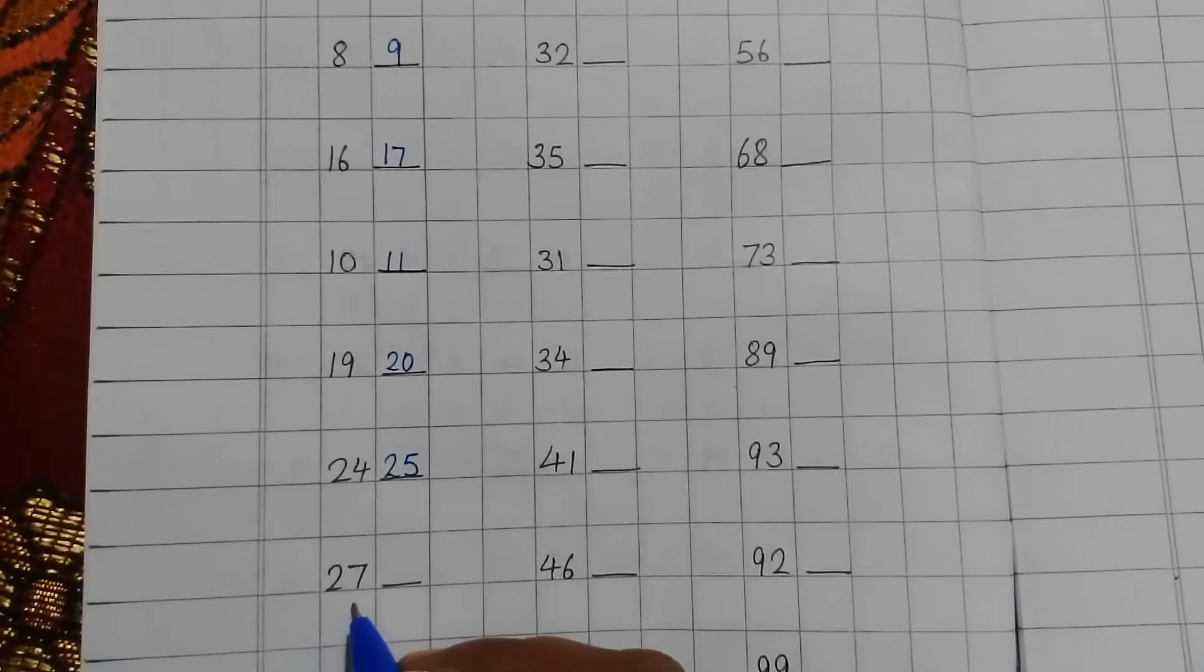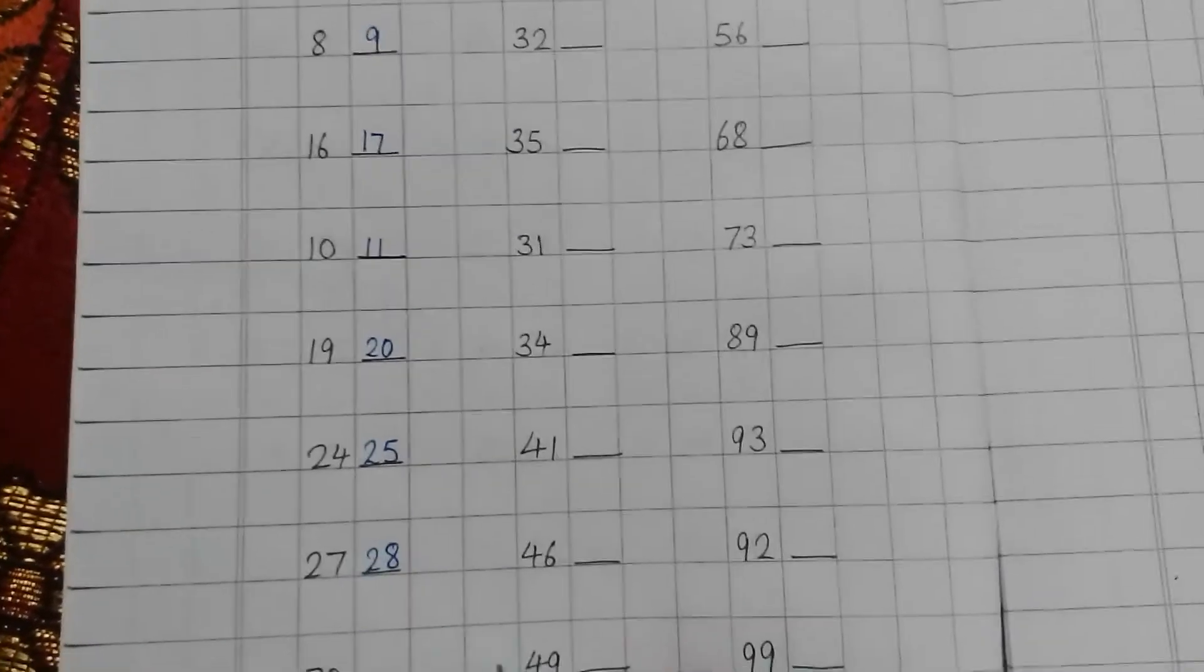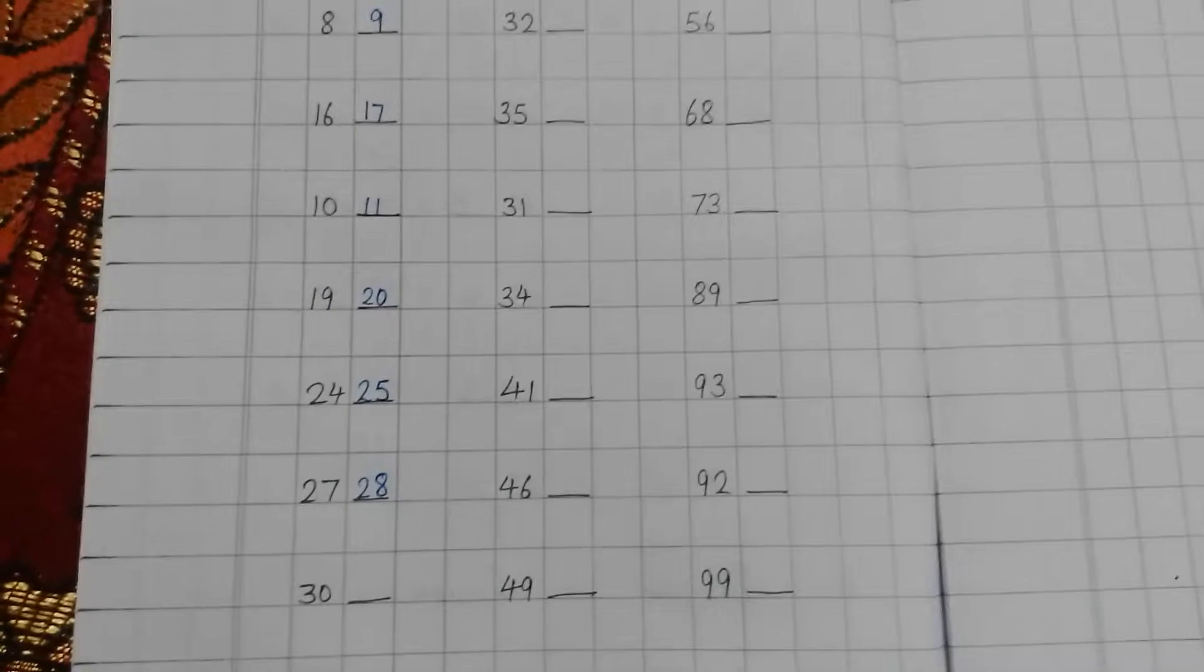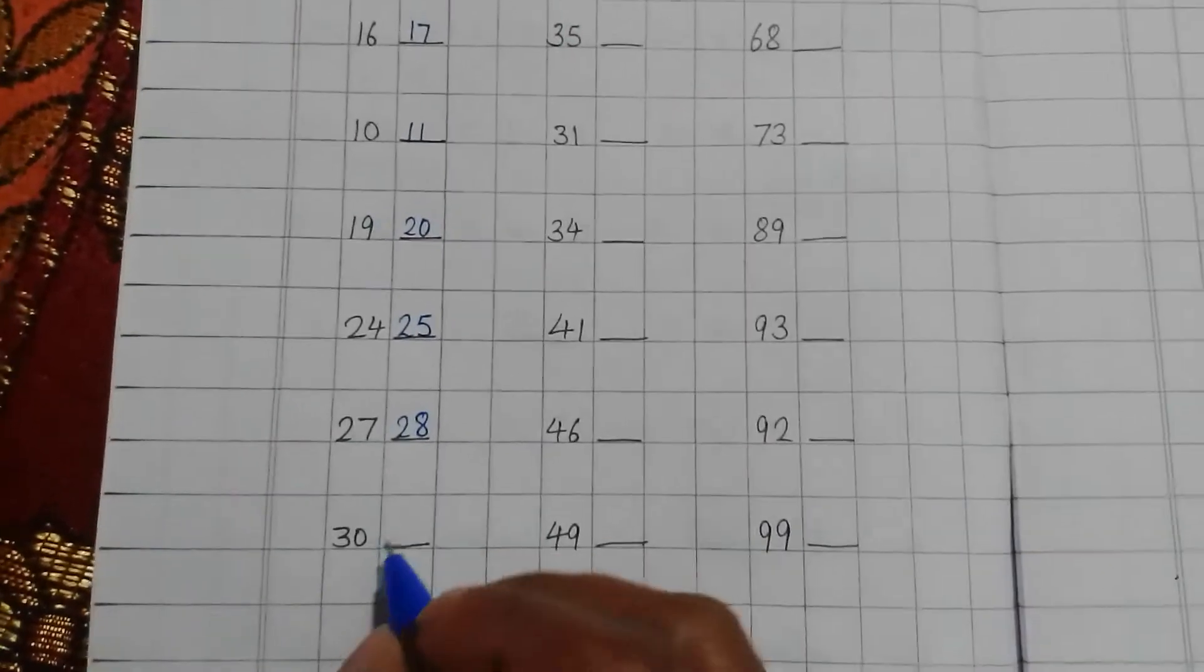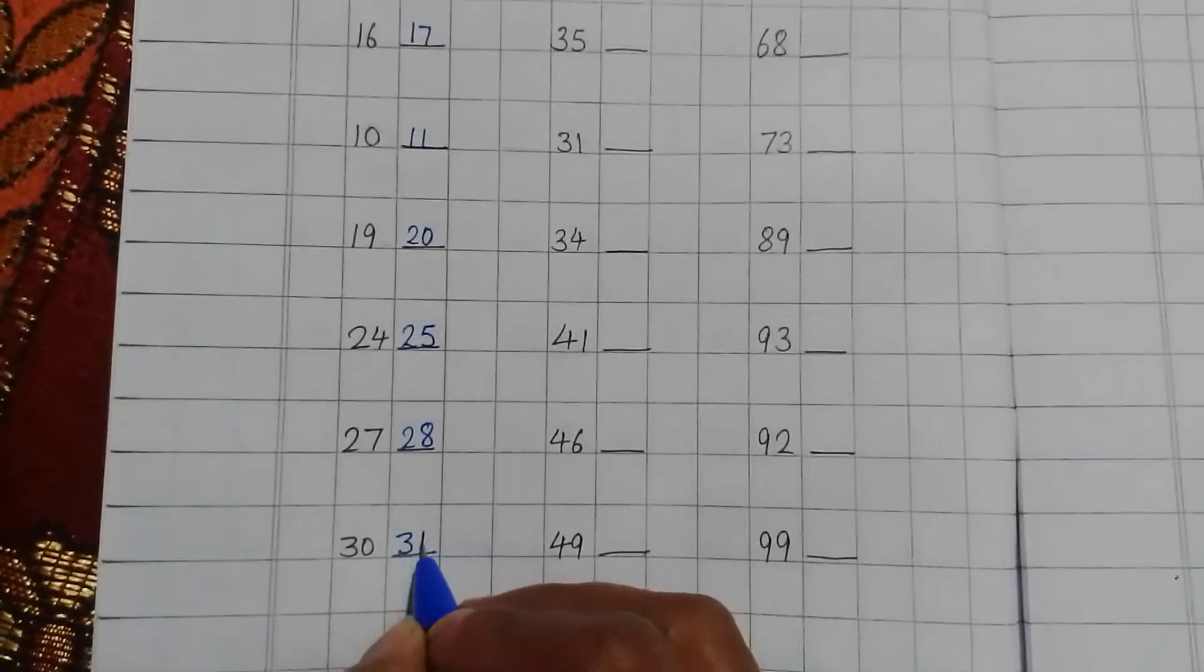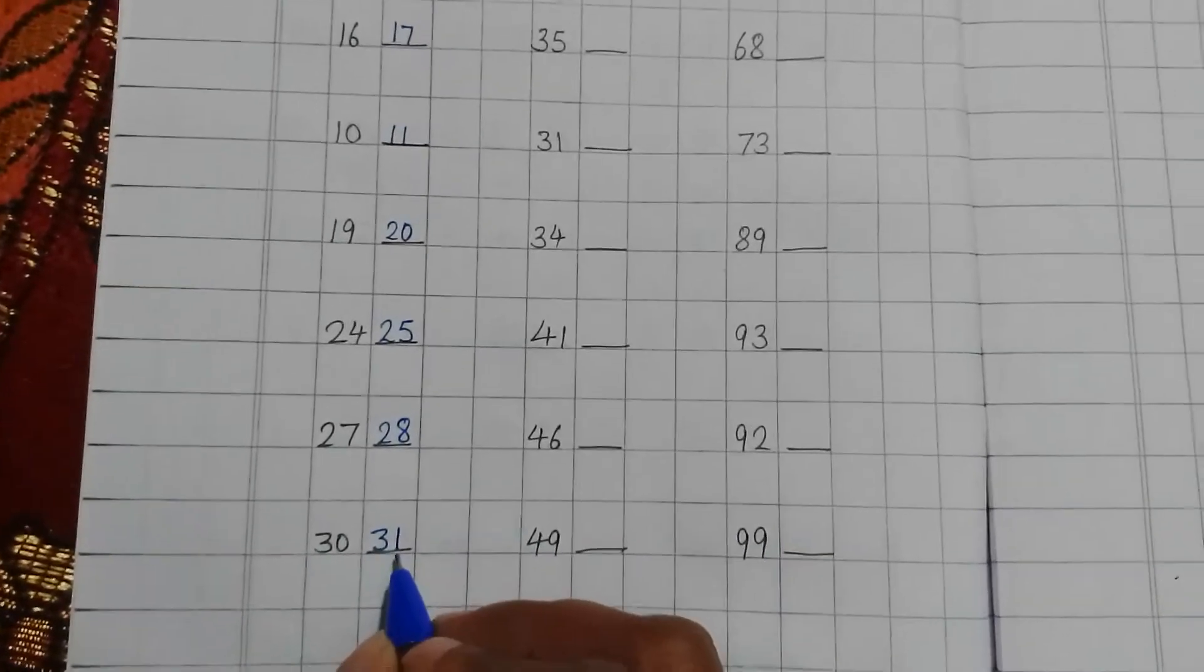27. 28. 30. So what will come now? 31. 30, 31.